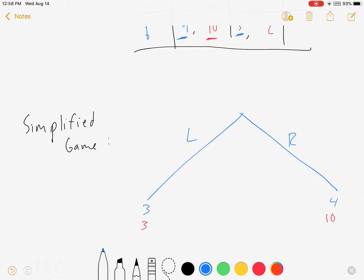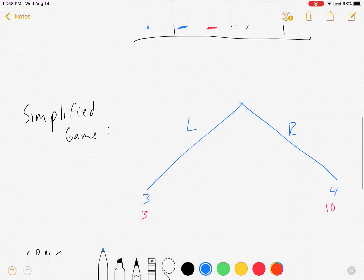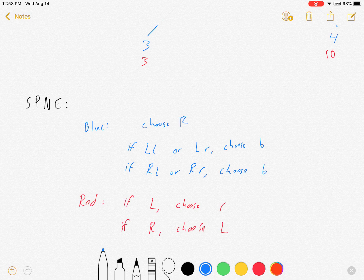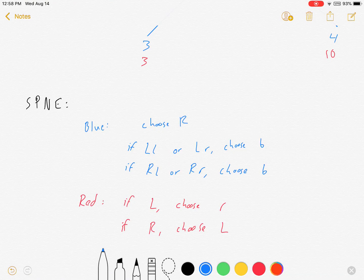So let's move from here and let's find our sub-game perfect Nash equilibrium, and here it is. Blue, if at the top of the tree, choose R. If left left or left right, choose B.